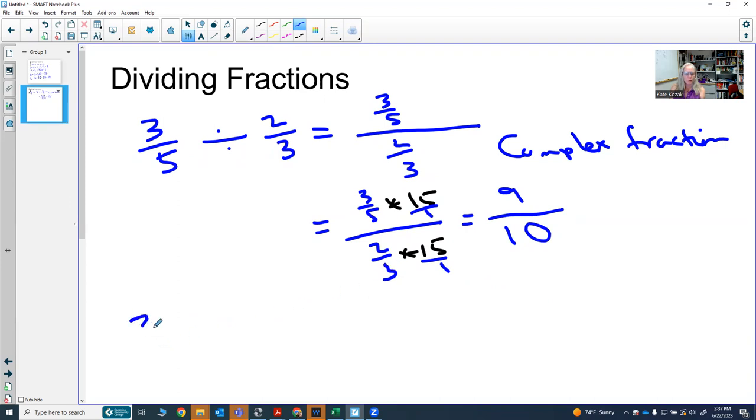But you could think of this as three over five and then multiply by the reciprocal of two-thirds. Reciprocal is the number that you'd multiply by two-thirds to get one and that is three over two. Then we just have to multiply these two factors, three over five times three over two. Multiplying through you get nine over ten.